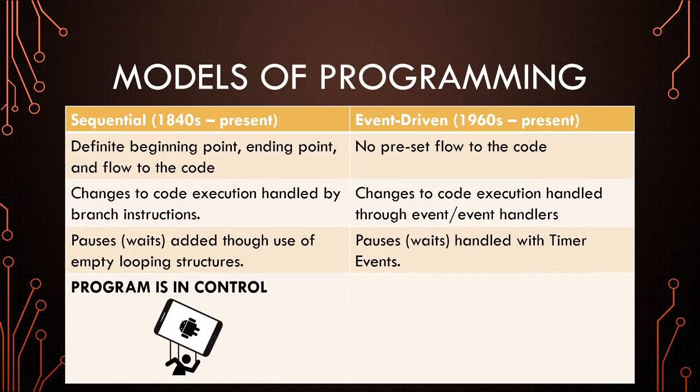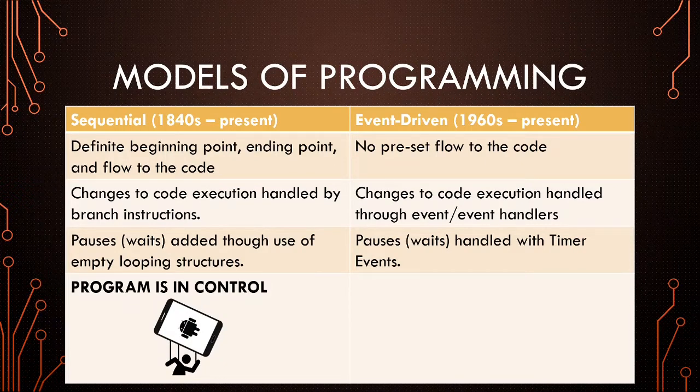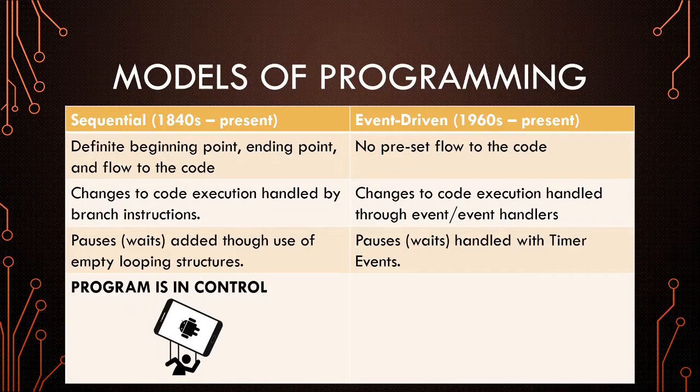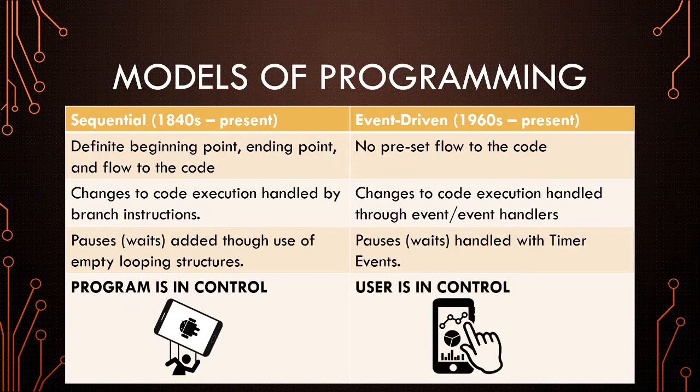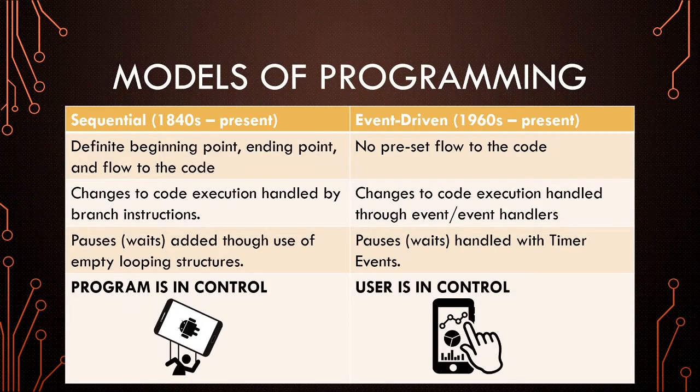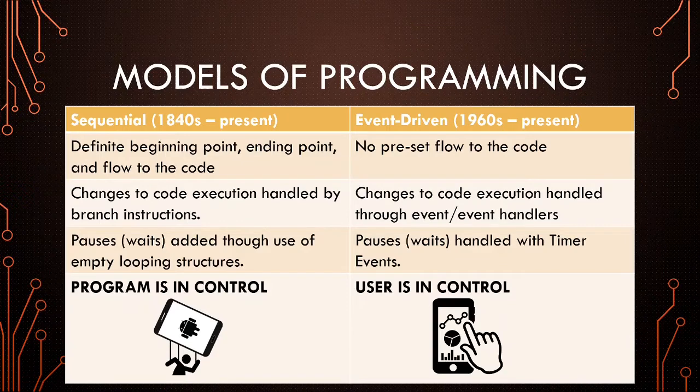So in other words, with sequential programming, the program is in control. The program runs and if the user wants to input something but the program isn't in that spot yet, then the user has to wait. Under event-driven programming, the user is in control. The user clicks on a button and then the code executes for that and there is no waiting required.